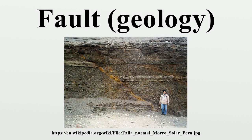A fault plane is the plane that represents the fracture surface of a fault. A fault trace or fault line is the intersection of a fault plane with the ground surface, and is also the line commonly plotted on geologic maps to represent a fault, since faults do not usually consist of a single, clean fracture. Geologists use the term fault zone when referring to the zone of complex deformation associated with the fault plane.